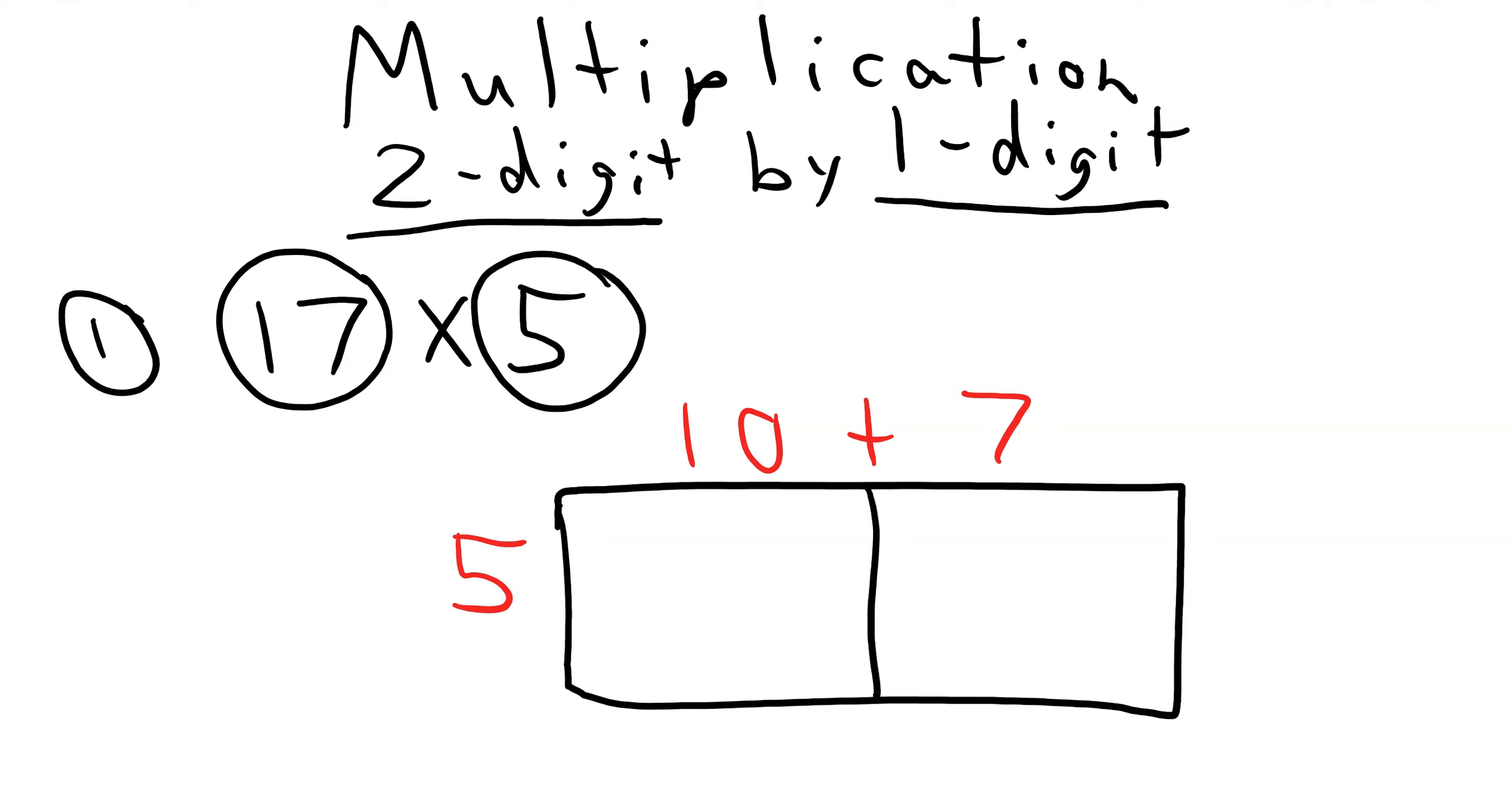Next, we will multiply. 10 times 5 equals 50. We know that because 1 times 5 is 5, and there's one 0 in the 10. And then we multiply 7 times 5, and 7 times 5 equals 35. If we don't remember, we can look at our multiplication table.